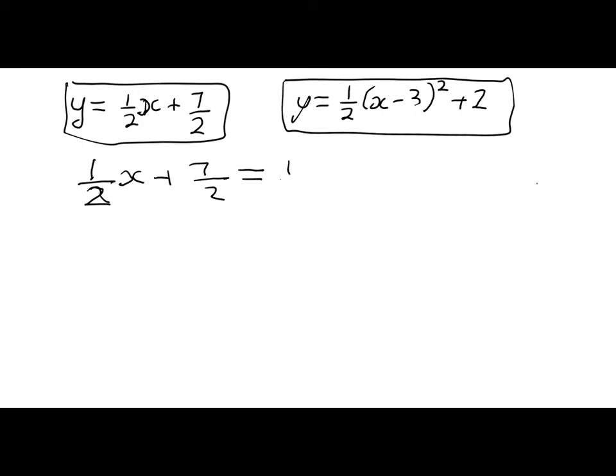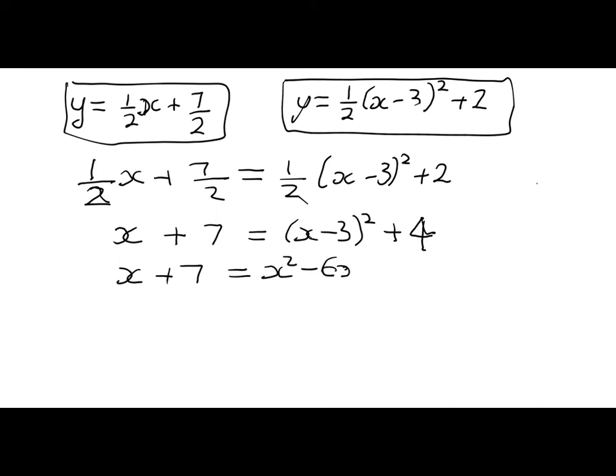Now the easiest way to clean that up is to times everything through by 2. That's going to get me x plus 7 is equal to x minus 3 squared plus 4. Be really careful with that step. Okay, now let's expand everything out. We've got x plus 7 is equal to x squared minus 6x plus 9 plus 4. We've got a quadratic. So to solve it, we set it equal to 0. And we get x squared minus 7x plus 13 minus 7 plus 6. 0 is equal to x minus 6 and x minus 1.